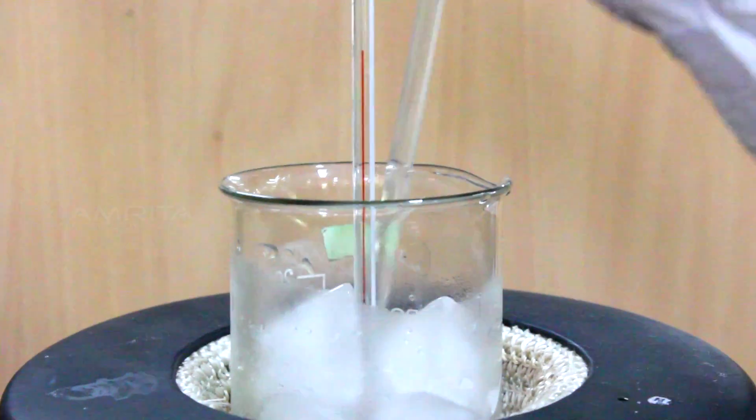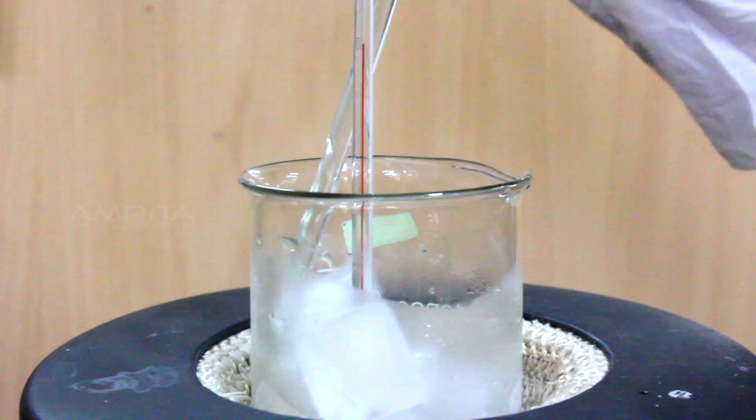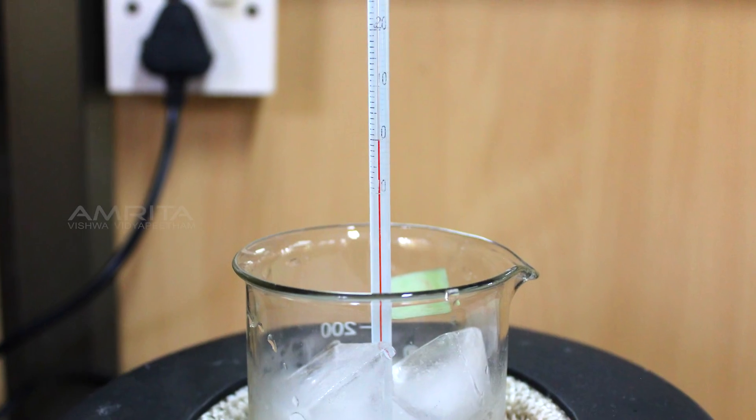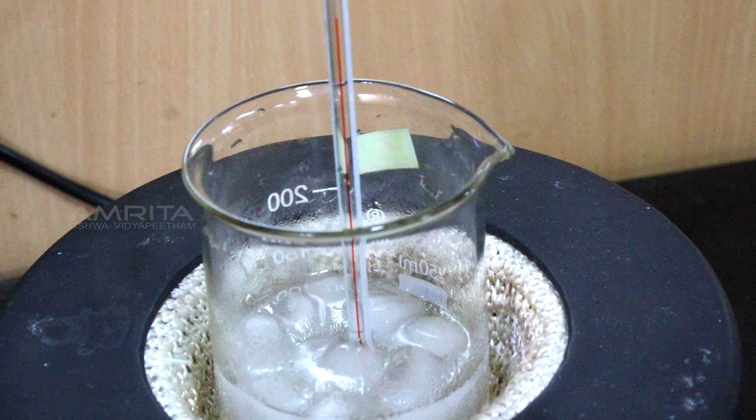Stir the ice cubes continuously using a glass rod and note the initial temperature T1 at 0 degrees Celsius when the ice starts melting.